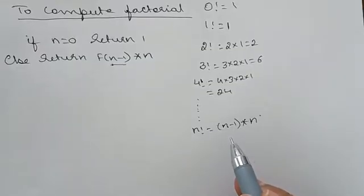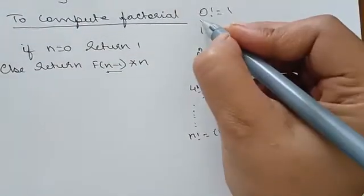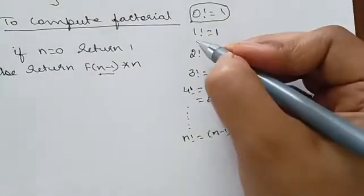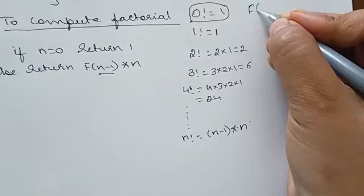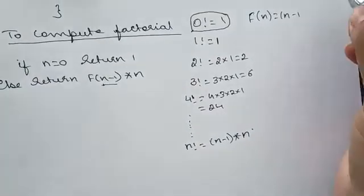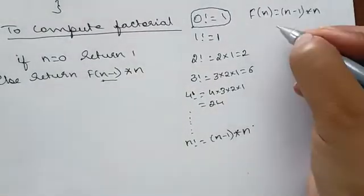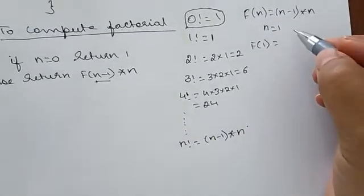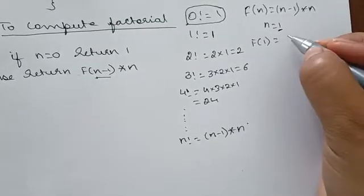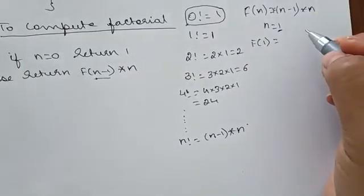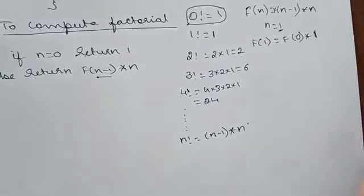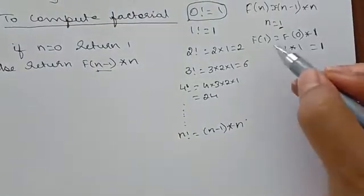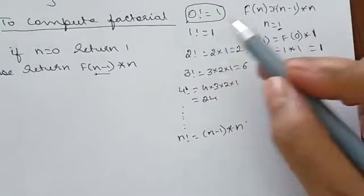For n=1: f(1) = f(n-1) × n = f(0) × 1. We already know f(0) = 0 factorial = 1. So 1 × 1 = 1, meaning f(1) = 1, which confirms 1 factorial equals 1.